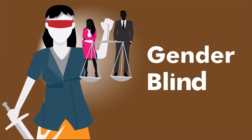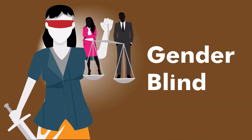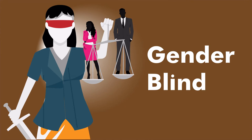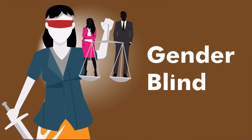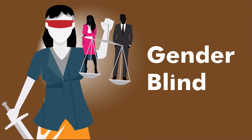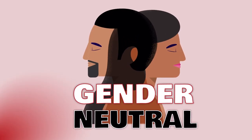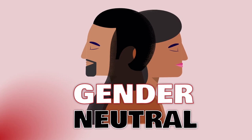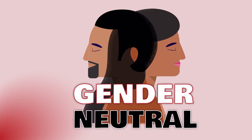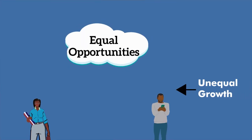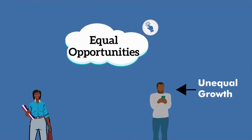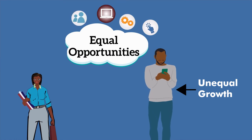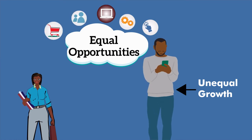Gender-blind approaches usually use gender-blind terms, which may result in girls, women, boys and men becoming invisible. Gender-neutral is when gender is not considered relevant to developmental outcomes, and gender norms, roles and relations are not affected by the technology or change.